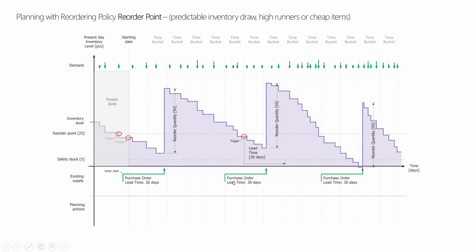So in this example, we would need to move those purchase orders from their current dates until that trigger point — there's a dampener period which is now exceeded. The dampener on the item card is set to less than 11 days, so it moves the order and reschedules it in the planning journal. But if the dampener period had been more than 11 days and there was no safety stock breach, it would not suggest moving the order. The dampener period is a buffer to handle whether or not to move items.